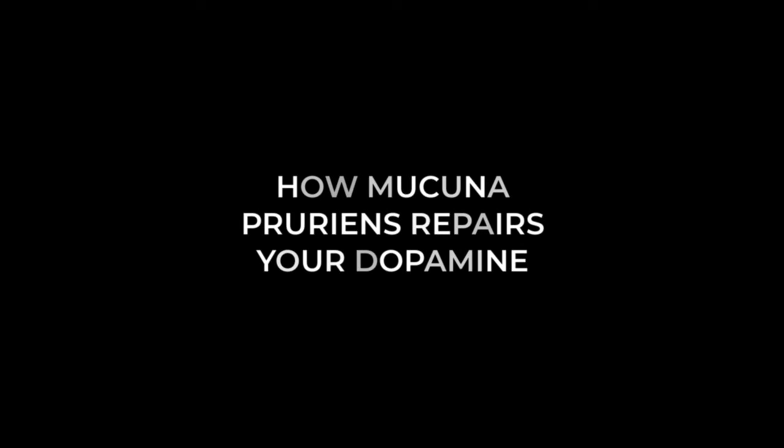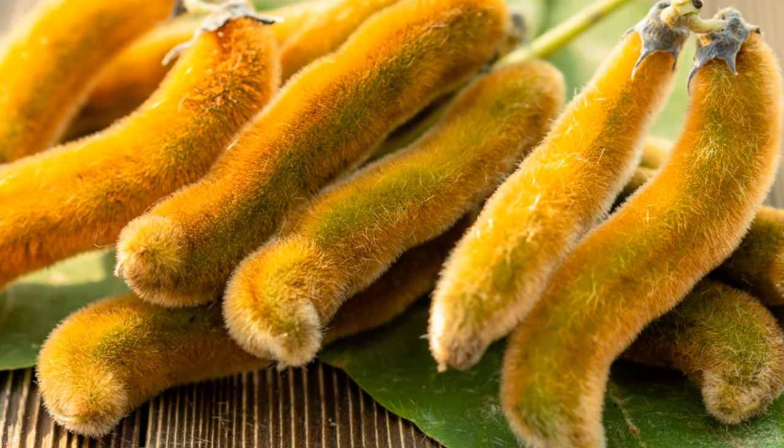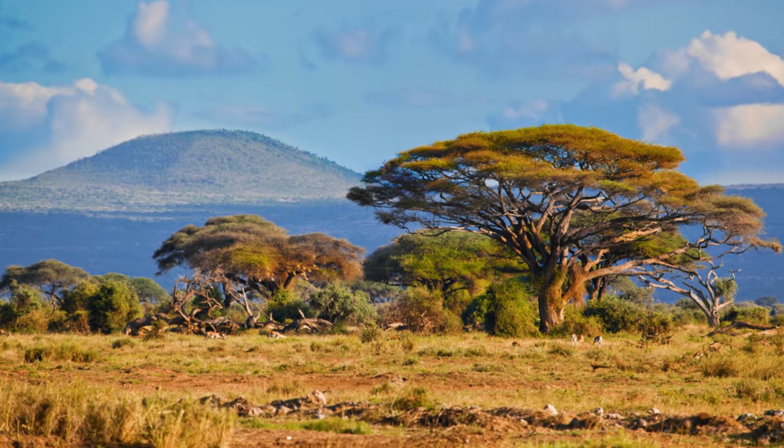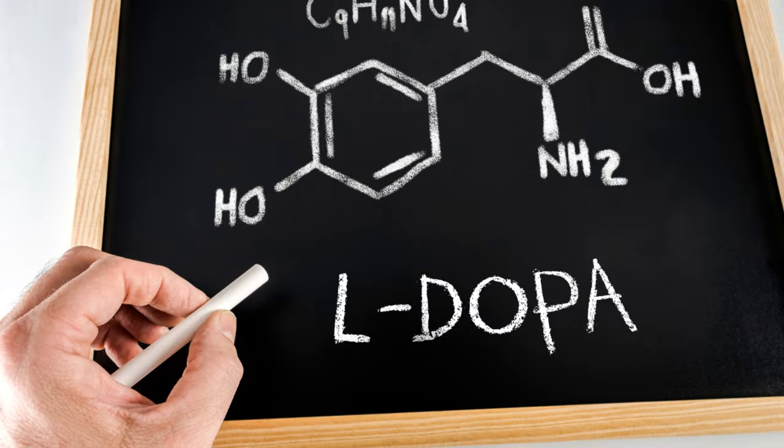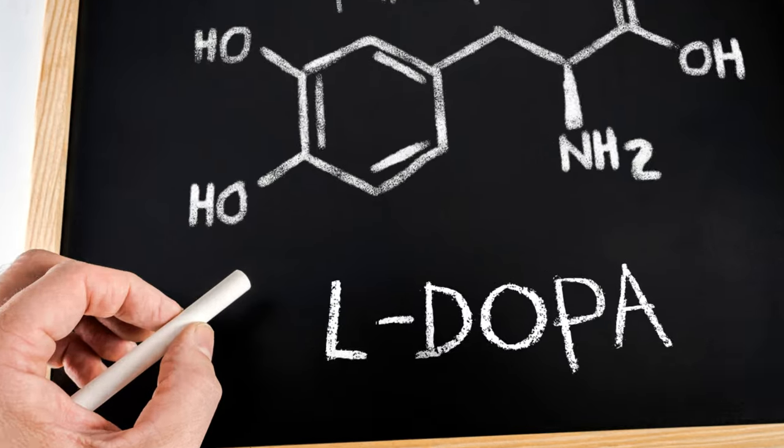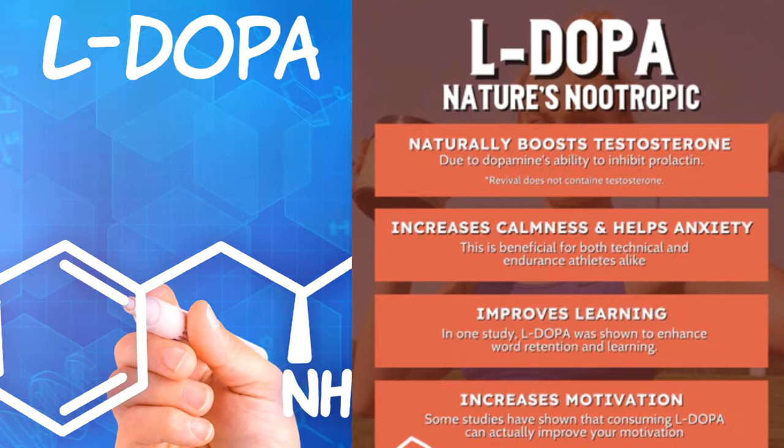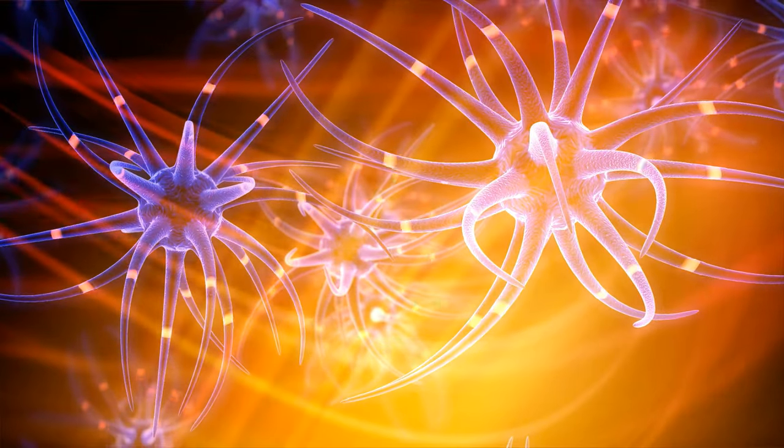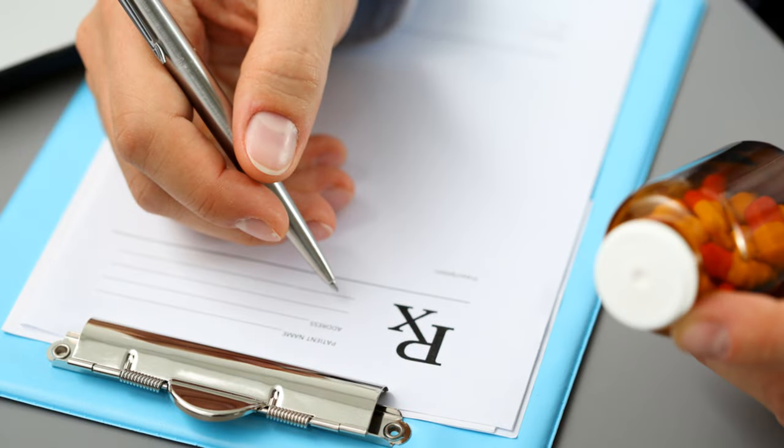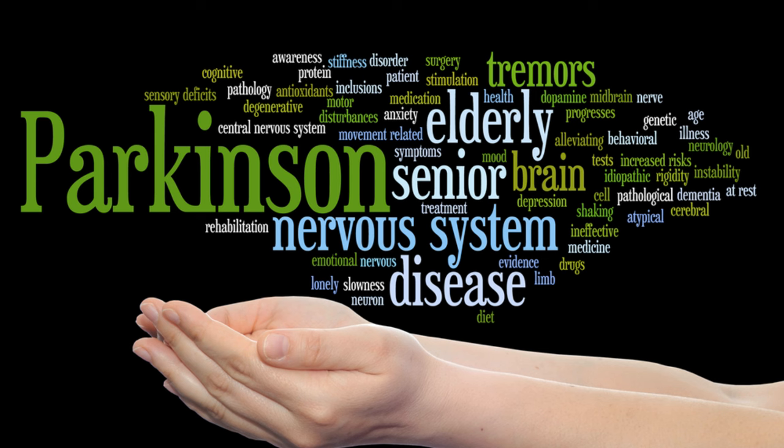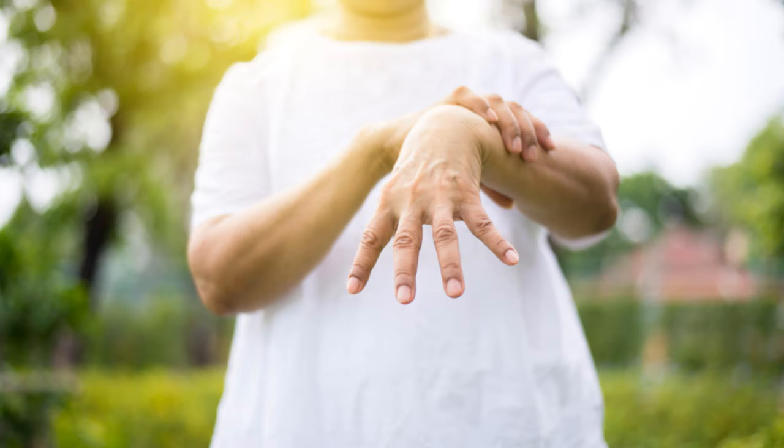How Mucuna Pruriens repairs your dopamine. Also referred to as velvet bean, cowhage, and other names, Mucuna Pruriens is a tropical legume native to Africa and Asia. This tropical legume superfood contains high levels of a dopamine precursor named levodopa, L-dopa. After consuming L-dopa, it converts to the chemical dopamine in the brain. L-dopa is also a medication commonly used by clinicians as a dopamine replacement agent for the treatment of Parkinson's disease. It is most effectively used to control bradykinetic symptoms apparent in Parkinson's disease.